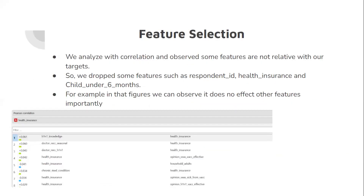Feature selection. In this part, we analyzed with correlation and observed that some features are not related to our targets, so we dropped some features such as respondent ID, health insurance, and child under 6 months. For example, in the correlation figures, we can observe that these do not affect other features importantly.